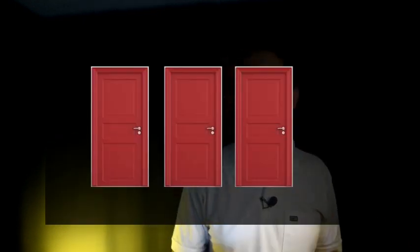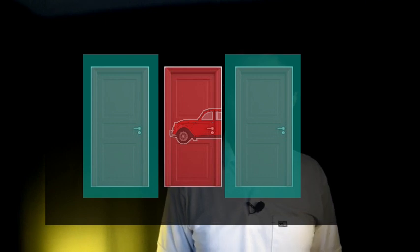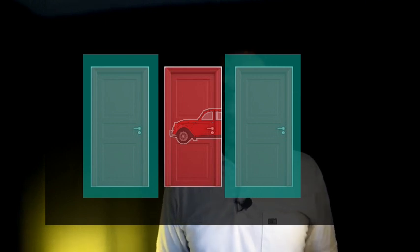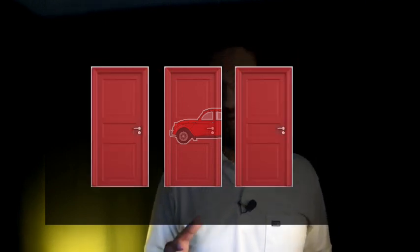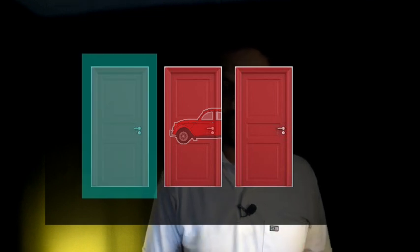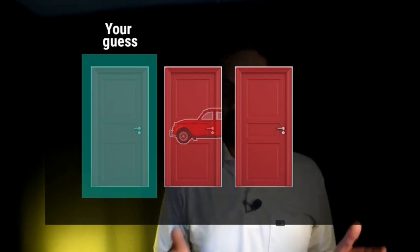You don't know where the car is, but the car is only behind one of the doors. Behind two other doors, there is nothing. So if you choose one door randomly, there is a good chance that you will choose a door with nothing behind, because there are two such doors. There is a good chance that one of the other two doors has a car behind.